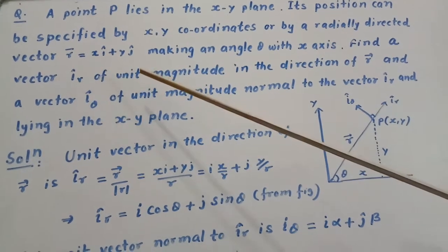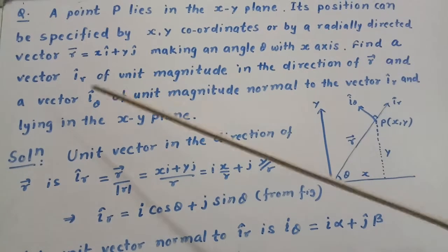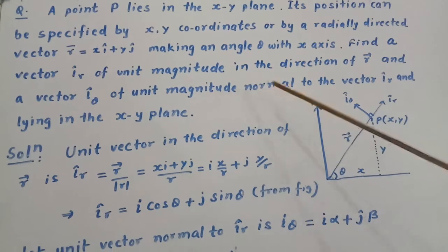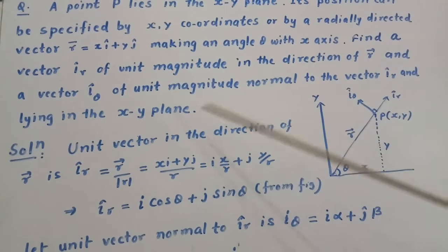Find a vector i_r of unit magnitude in the direction of vector R and a vector i_theta of unit magnitude normal to the vector i_r and lying in the xy plane.